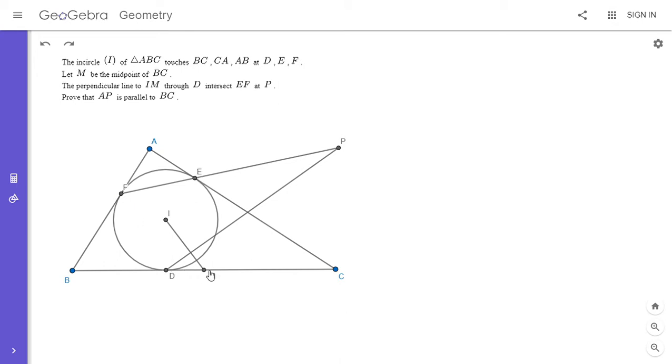We let M be the midpoint of BC, and the perpendicular line to IM through D passes through or intersects EF at point P, and we want to show that AP is parallel to BC.